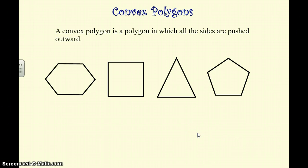So, convex polygons. Convex polygons are polygons in which all the sides are pushed outward. So let's take a look at this hexagon here. If you notice, you can see all the sides are pushed outward. No one is being pushed inward or toward the interior of the shape. They're all pushed toward the exterior of the shape.